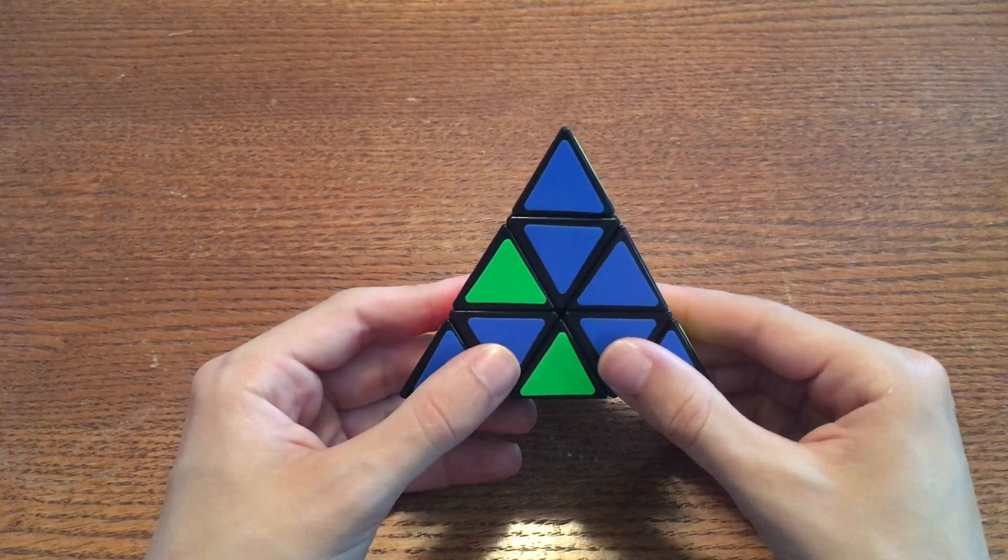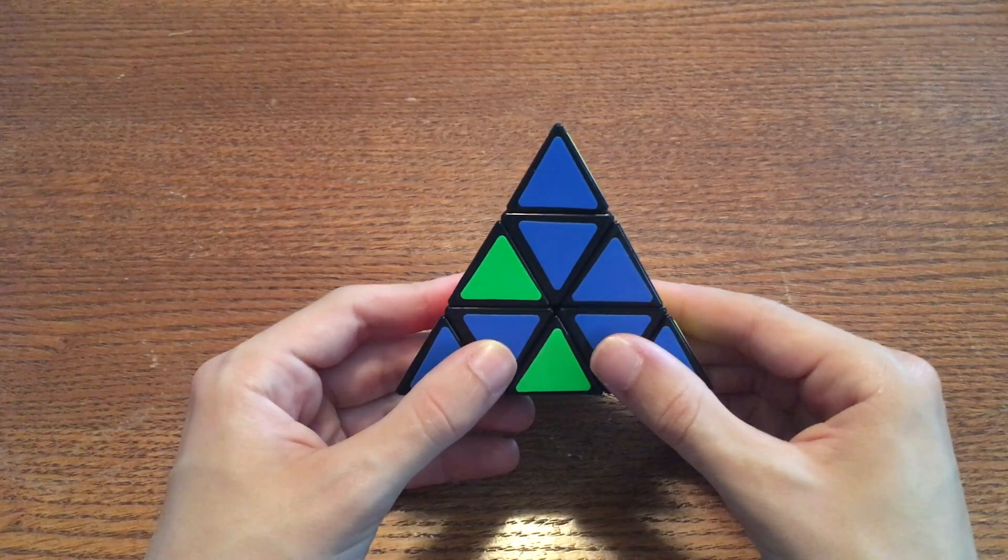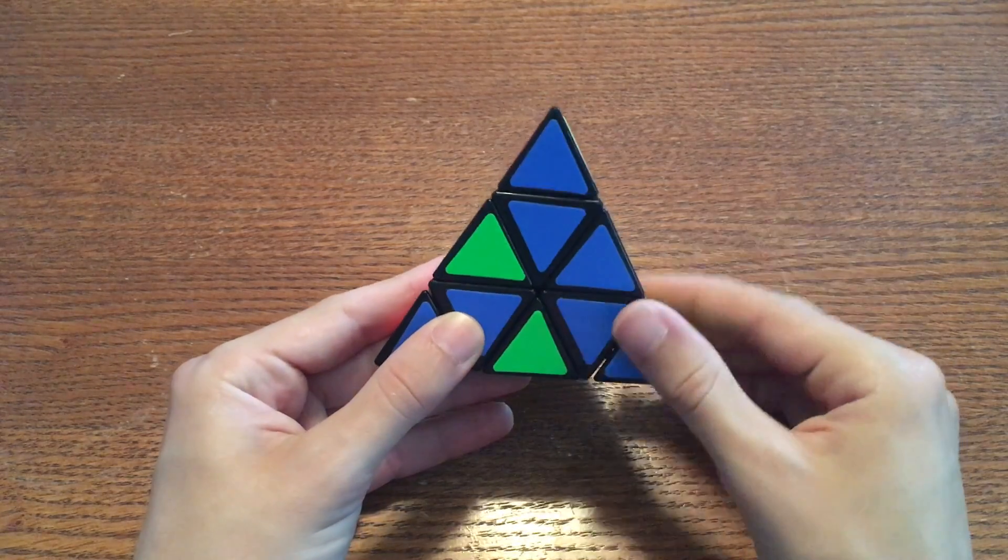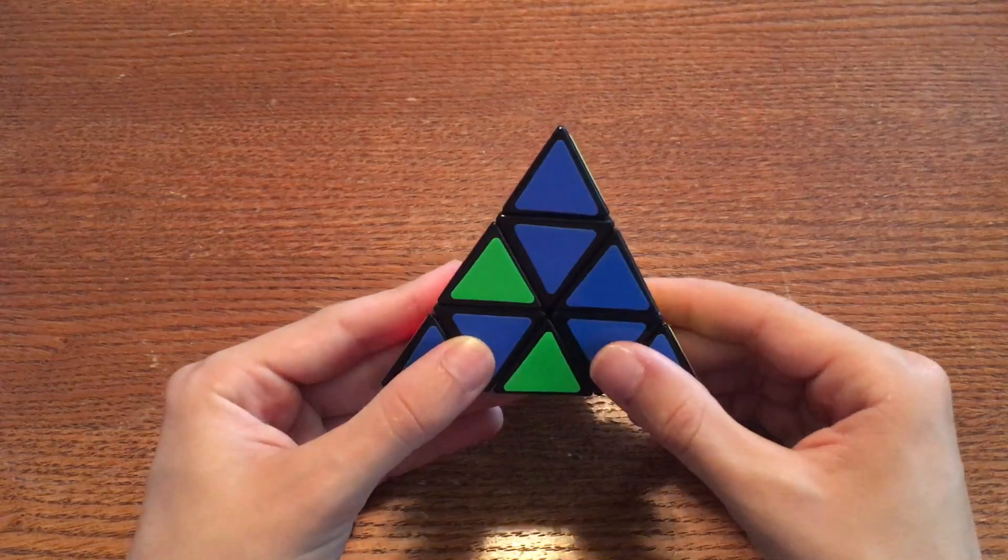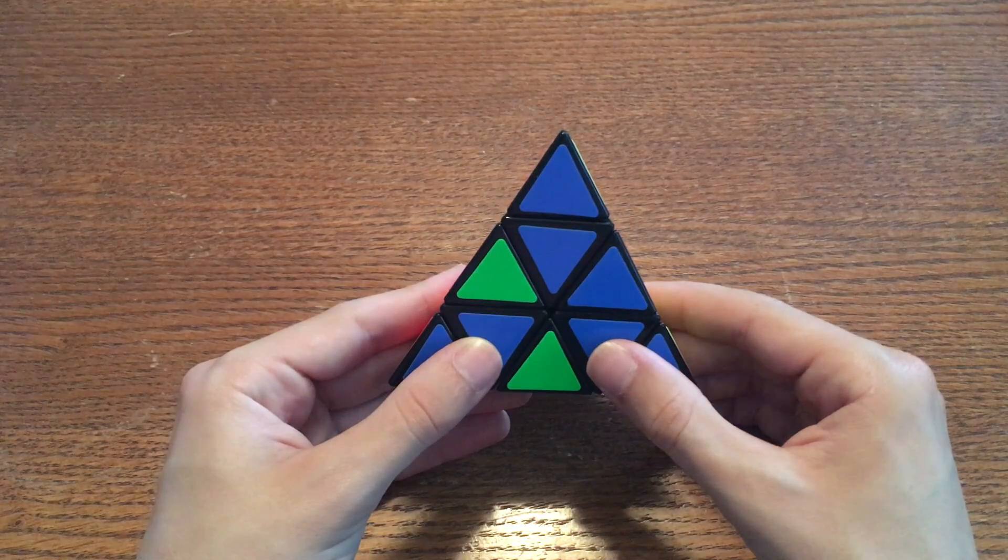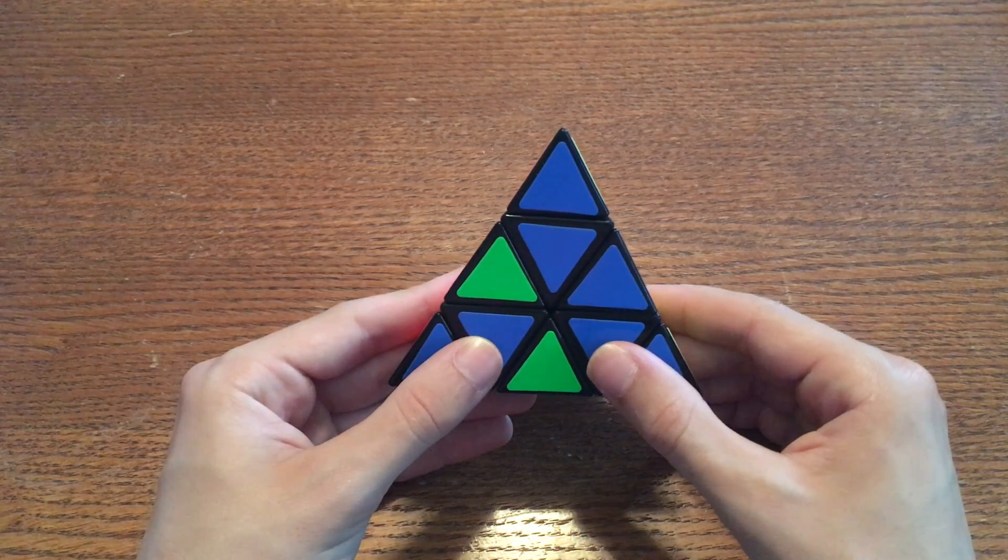Now every time just before you do that algorithm, you need to check, is the bottom edge already in the correct place? You should only do the algorithm if the bottom edge is not in the correct place.